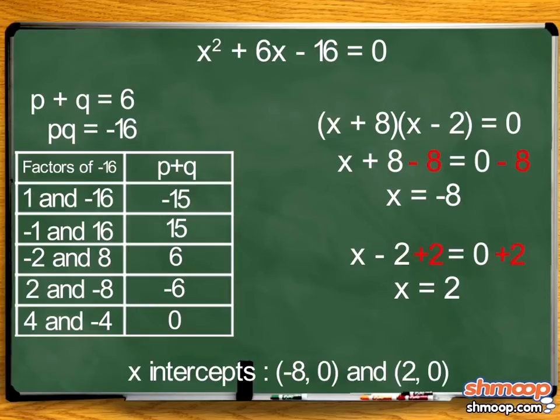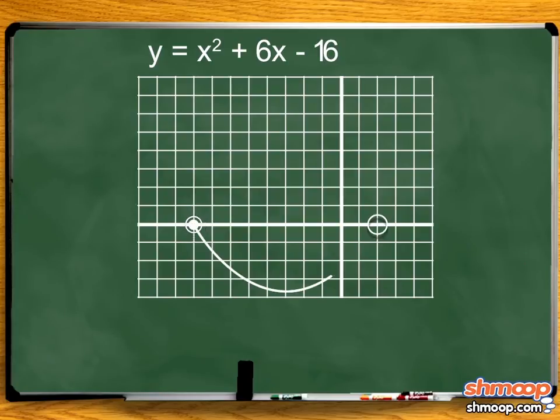How does this relate to the clown's smile? Well, the width of his smile is the distance between those two points, which is 2 minus negative 8, or 10 inches.